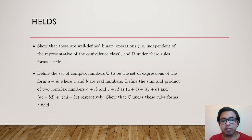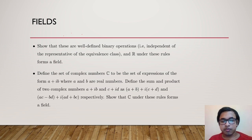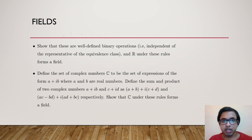Define the set of complex numbers as the set of expressions a + ib, where a and b are real numbers and i is taken as a symbol (the square root of −1). Define the sum of a+ib and c+id as (a+b) + i(c+d) and the product as (ac−bd) + i(ad+bc). Show that C under these rules of multiplication and addition forms a field.